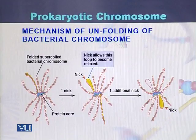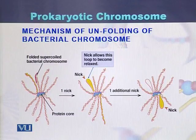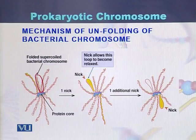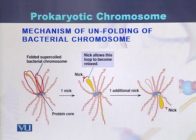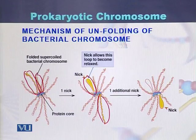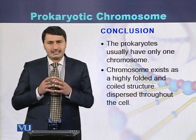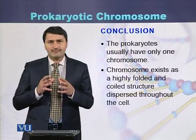Mechanism of unfolding of the bacterial chromosome. In this diagram, we can see the folded supercoiled DNA of the bacterial chromosome. To remove these foldings, nicks are produced at particular locations. Once the nicks are produced, the DNA is relaxed. Here, a nick is produced on one strand and the DNA is relaxed. Another nick is produced on another fold of the bacterial chromosome, and once that nick is produced, the DNA is relaxed there as well. We can conclude that prokaryotes have a single circular chromosome present within the nucleoid region, and this chromosome has coiling and supercoiling.